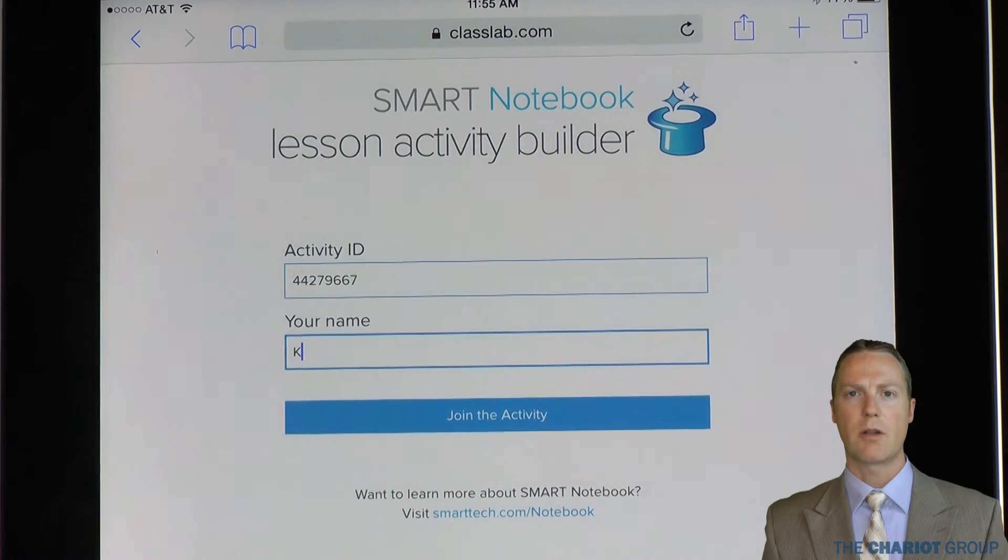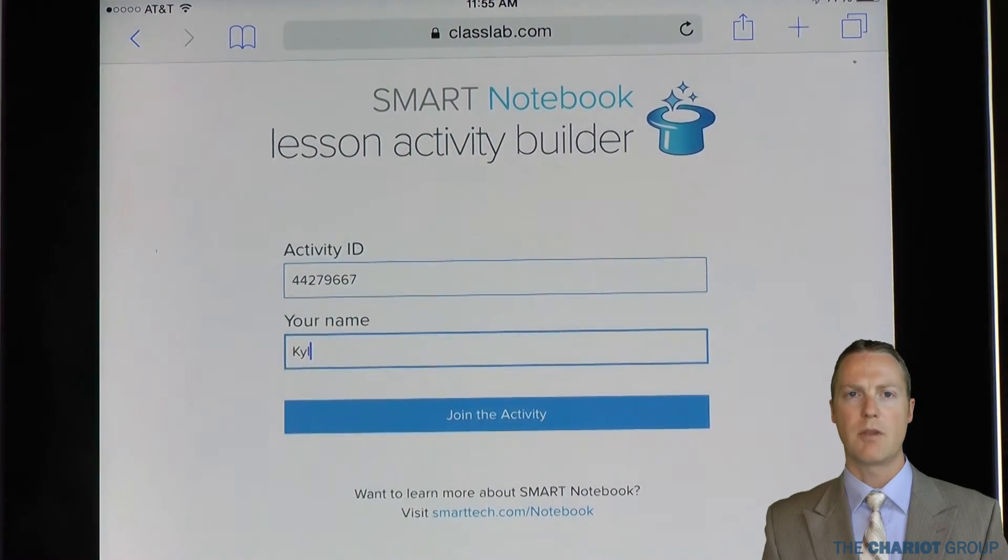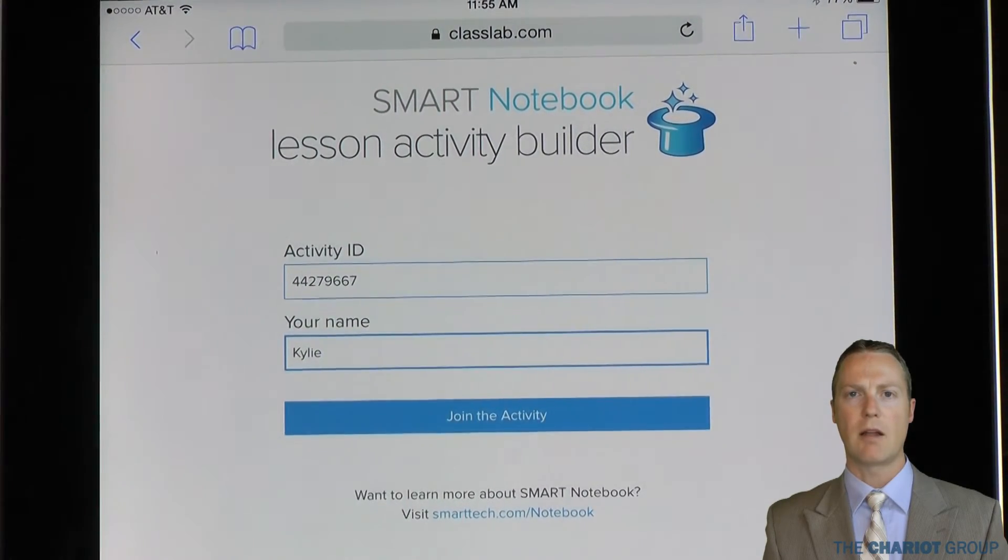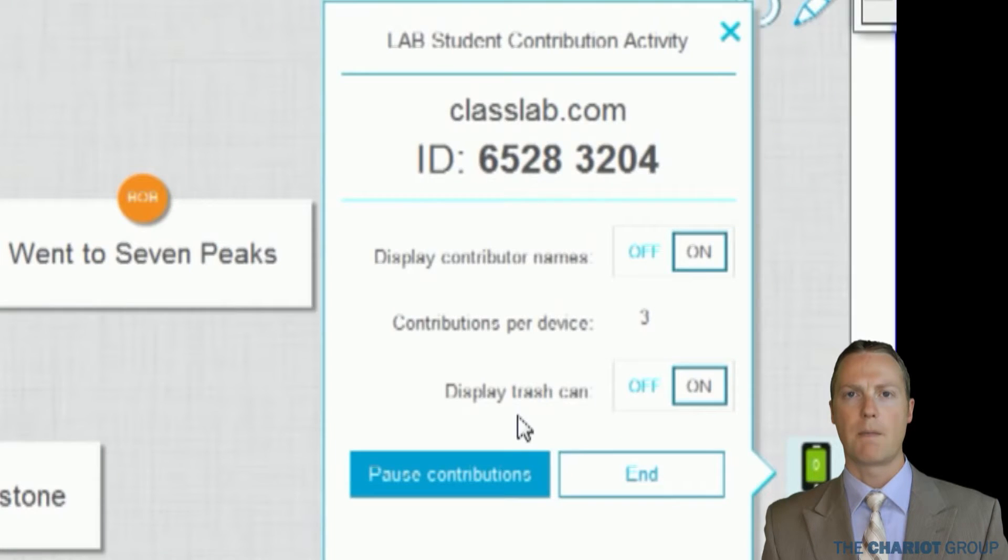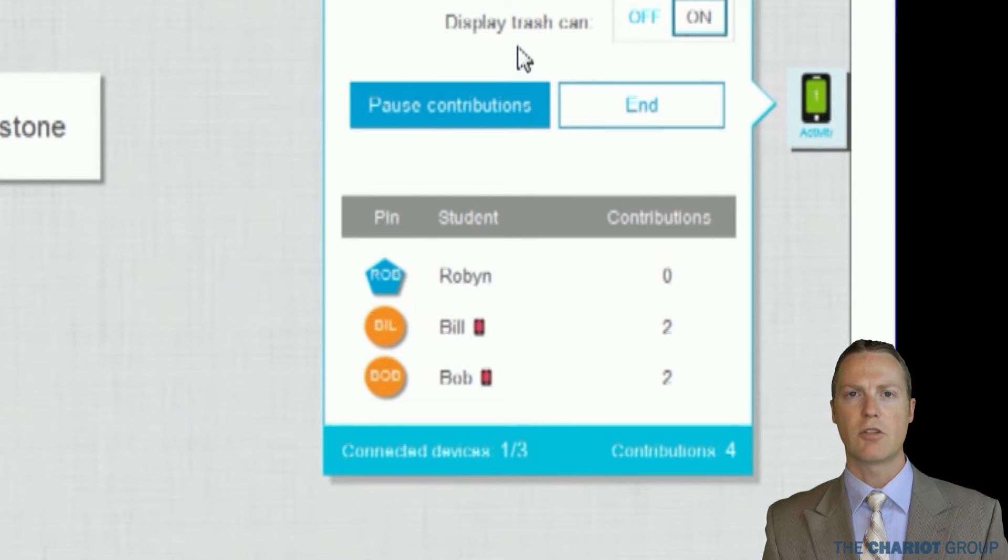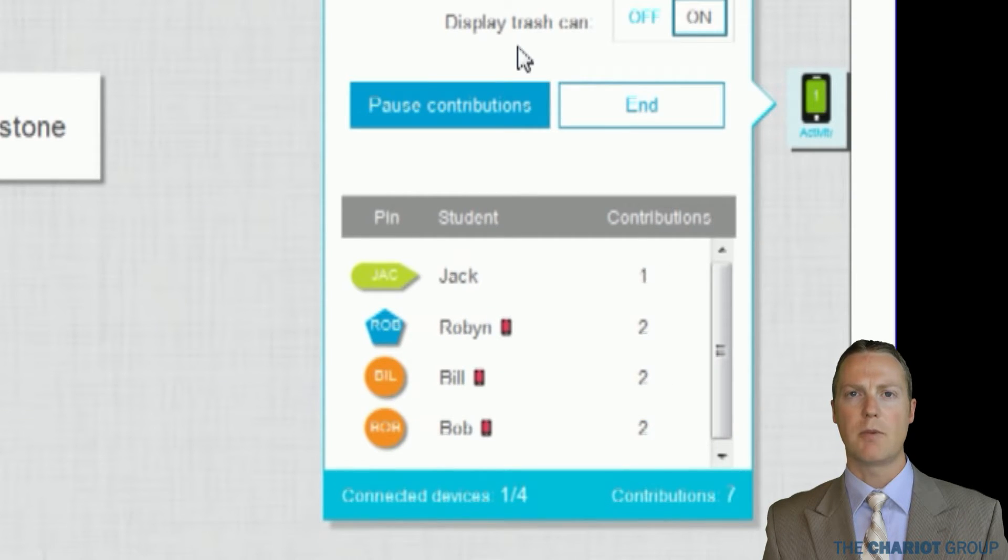Students will open a browser, go to classlab.com, and then type in the activity number as well as their name and click Join the activity. Once the students have connected, their name will show up in the student list on the activity control panel. Each student will be assigned a pin that will be used to pin their contributions to the board.